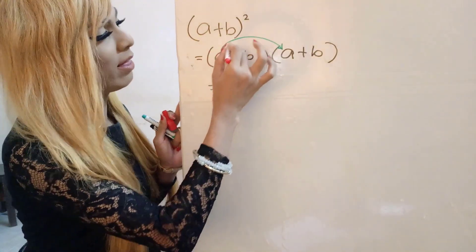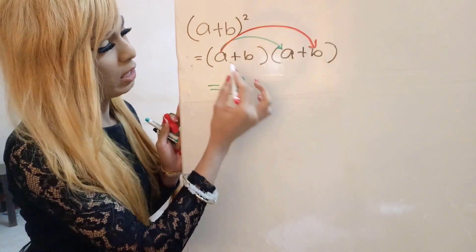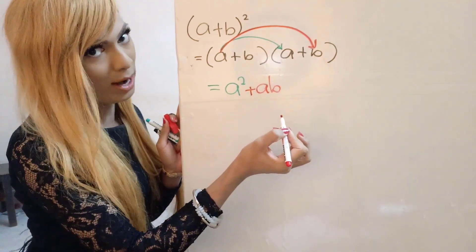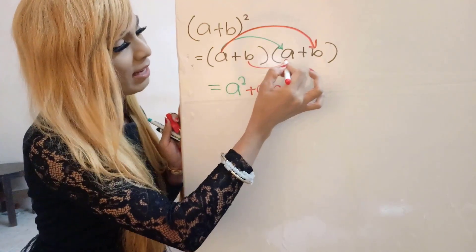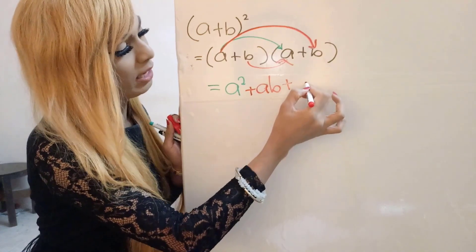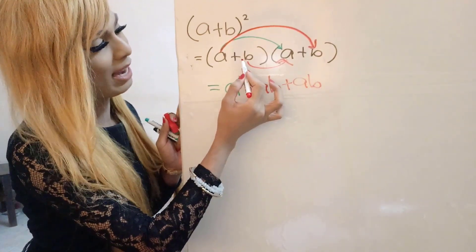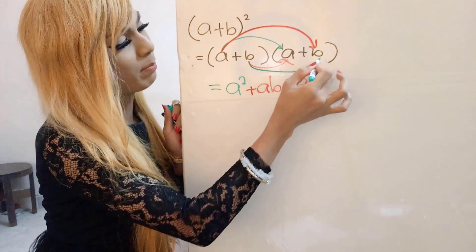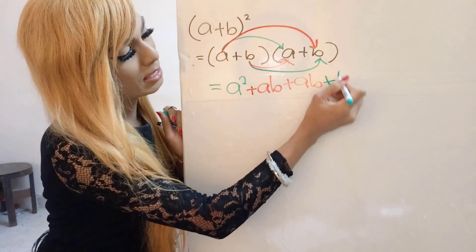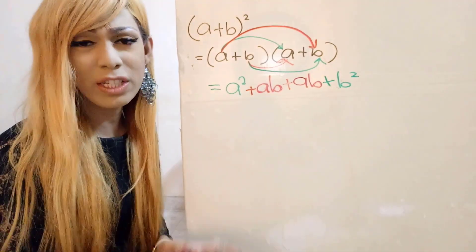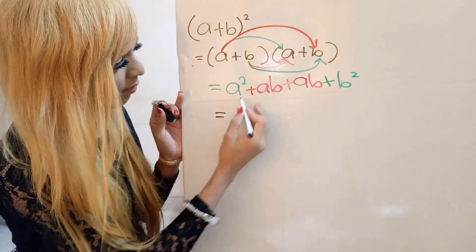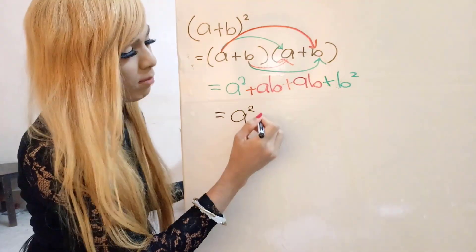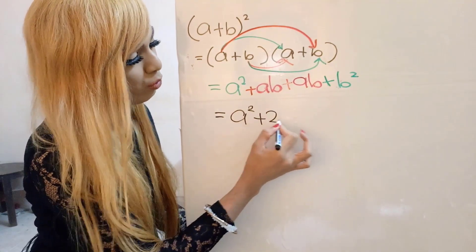Then we multiply a times b to get positive ab. And then b times a also gives us positive ab. Then b times b gives us plus b squared. Now ab and ab can be added together, so they become plus 2ab.